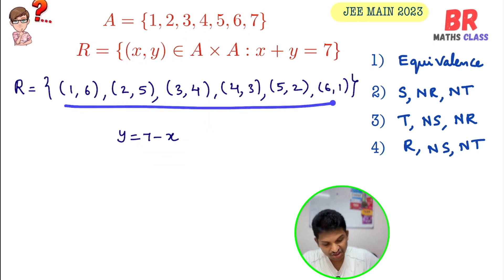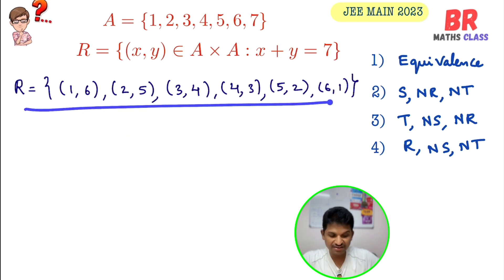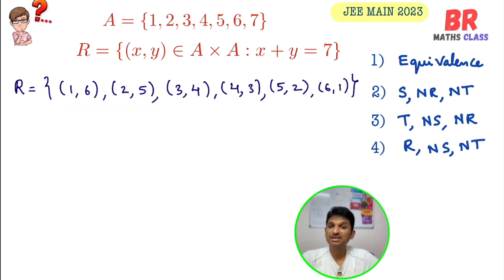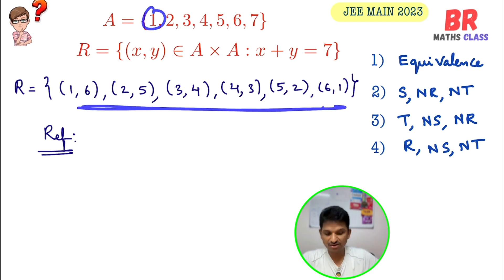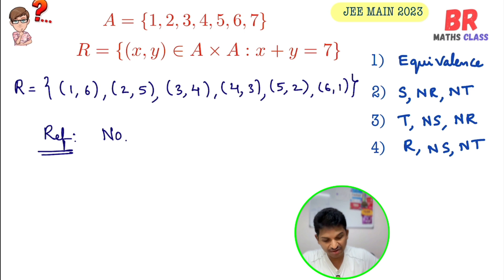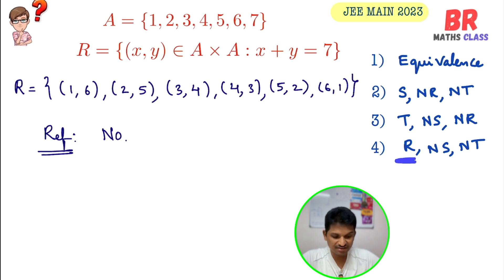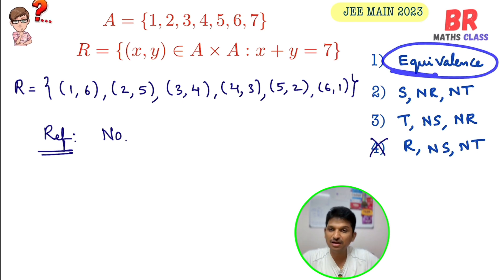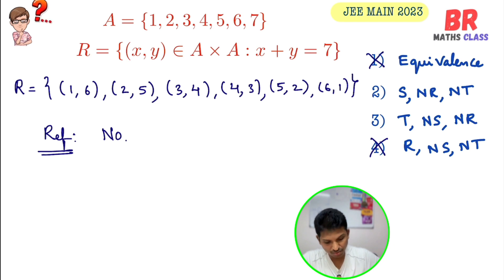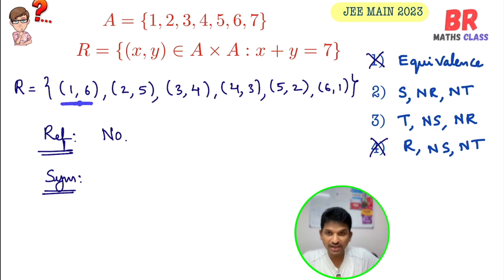Now checking the relation in roster method is very easy. For reflexive: is (1,1) in the relation? No. So this relation is not reflexive. Best method is to eliminate options — any option saying it is reflexive is not correct, so the fourth option is out. The equivalence relation option is also out since it requires reflexivity.